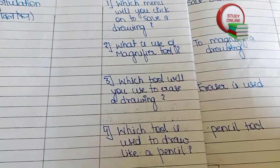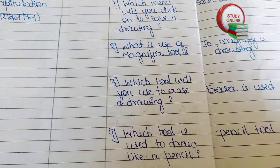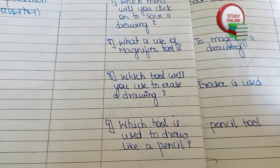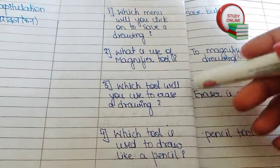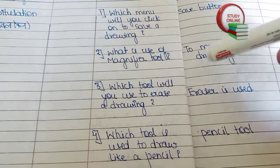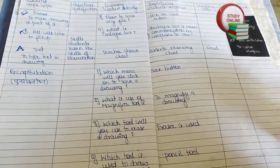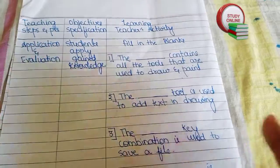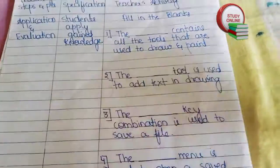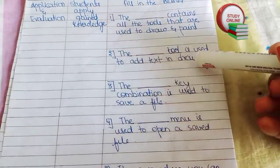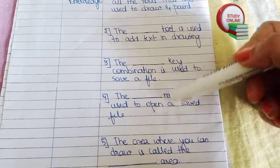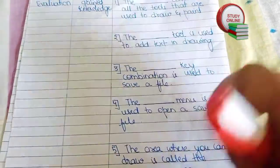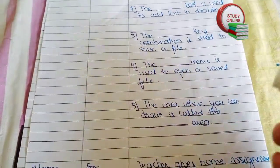I have added four questions for recapitulation — you can extend up to five. This is how we make the lesson plan. For the last part, application and evaluation, we give fill-in-the-blanks to students. I have mentioned five fill-in-the-blanks here. Do not exceed five — five is the maximum.